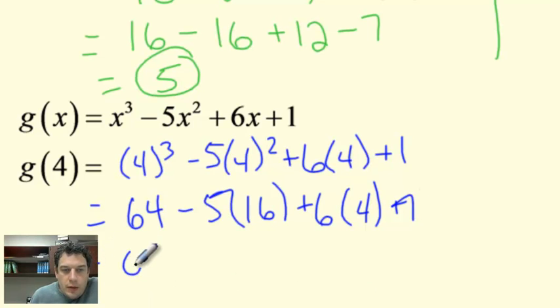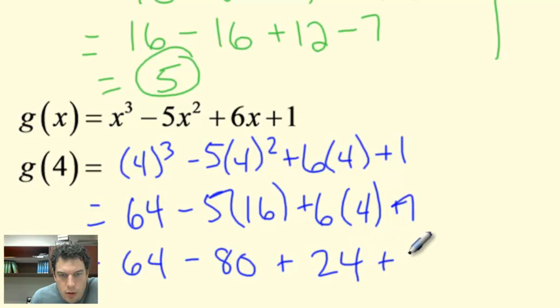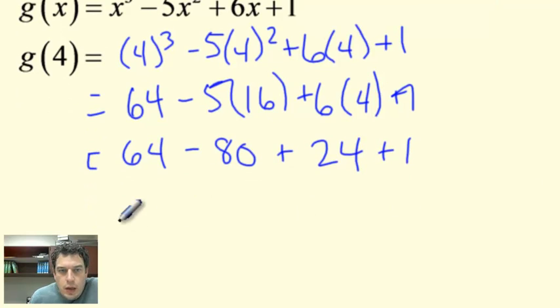Multiply. 64 minus, I think, let's see, 50, 80 plus 24 plus 1. Let's scroll down just a tad. And then let's see, 64 minus 80, that's negative 16. 24 plus 24 is 8 plus 1 is 9.